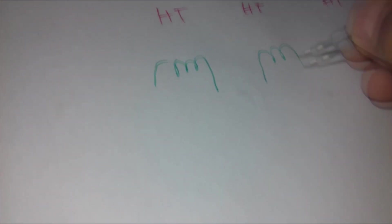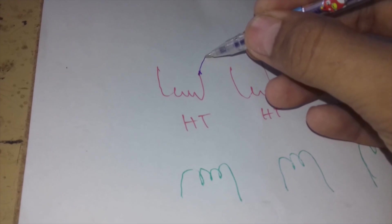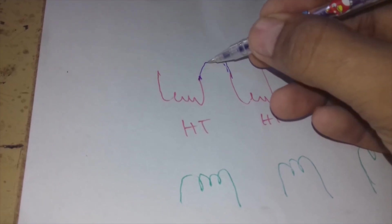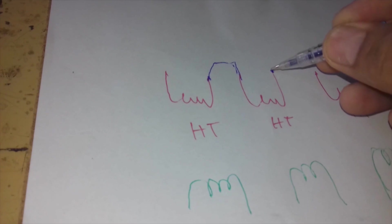On paper, if we draw the primary side winding, we draw three windings — HT, HT, and HT. This is known as the high voltage side or high tension side. Now I will draw the secondary side windings. There are three windings for the primary and three windings for the secondary. The primary side is connected together as delta — the ending of this coil is connected to the starting of the next coil, and the ending of the second coil is connected to the starting of the third coil.